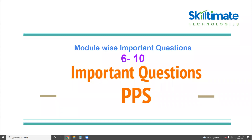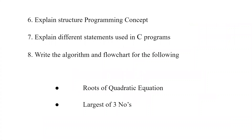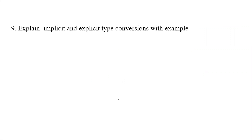Hello all. In this video, I am going to explain module-wise important questions. Question number 6: Explain structured programming concept. Question number 7: Explain different statements used in C programming. Write the algorithm and flowchart for roots of quadratic equation and largest of three numbers. Explain implicit and explicit type conversions with example.